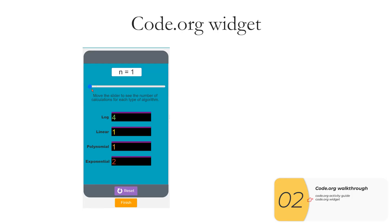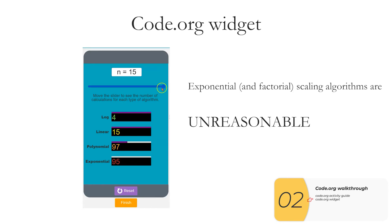Finally, Code.org has us look at their widget, where we look at N, which is say the number of items that we have, and then we see how many calculations our algorithm is going to take if it scales as log, linear, polynomial, or exponential. And you'll see for N equals three, the polynomial is actually worse. But as I go to higher and higher numbers, you're going to see how poorly this exponential scales and why we should never use algorithm that scales exponentially. So hopefully you can see why Code.org calls exponential algorithms unreasonable.